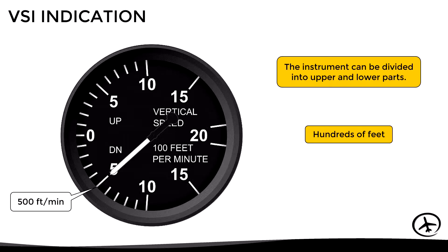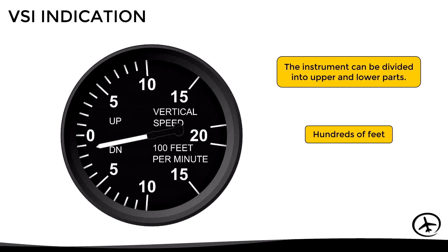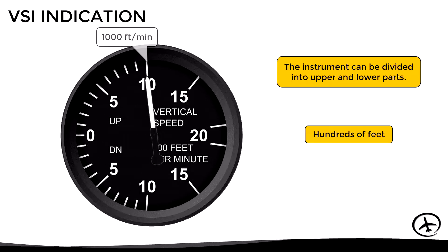If the needle moves down like this, it would indicate a rate of descent of 500 feet per minute. In this other position it would indicate an 800 feet per minute descent, and here it would indicate a 1,000 feet per minute climb. Note that the scale is expressed in hundreds of feet, but it may vary depending on the instrument design.